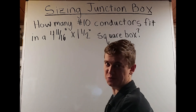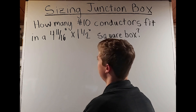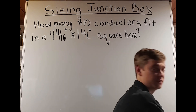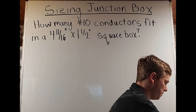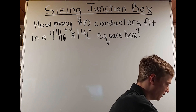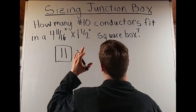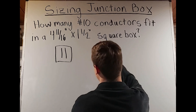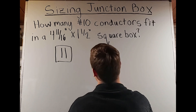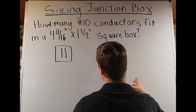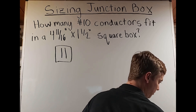These questions will get more complex. Next: how many number-10 conductors fit in a four-and-eleven-sixteenths by one-and-a-half inch square box? Using Table 314.16A, we find that size under square box and look under number-10 — we see the number 11. So 11 number-10 conductors fit in the four-and-eleven-sixteenths by one-and-a-half inch square box. The table already maps this out for us, similar to how Annex C simplifies conduit fill calculations.